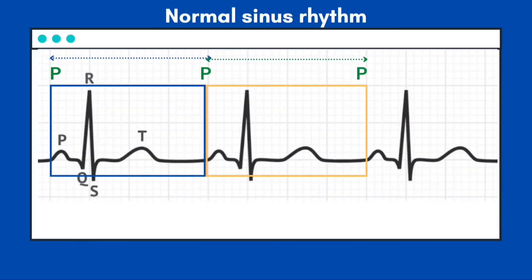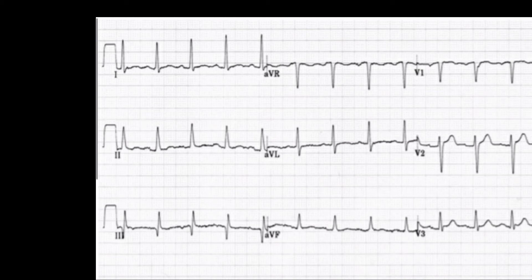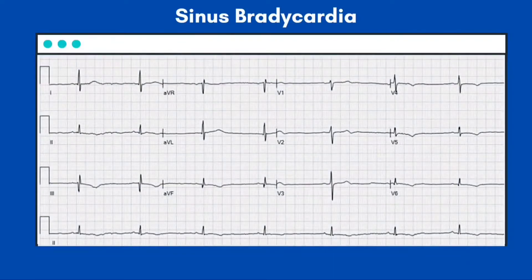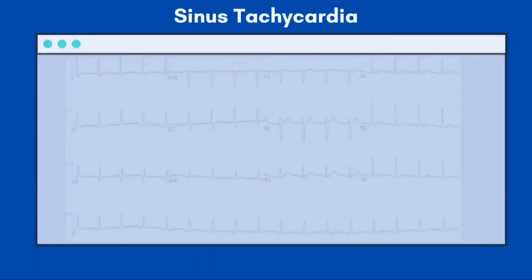A normal sinus rhythm is defined as a regular atrial depolarization rate between 60 to 100 per minute of sinus nodal origin, as demonstrated by a positive P wave vector in leads 1, 2, 3, and aVF. Sinus bradycardia is defined as a rate of atrial depolarization less than 60 per minute at the origin of the sinus node, as indicated by a positive P wave vector in leads 1, 2, 3, and aVF.